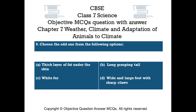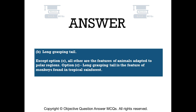Question number 9. Choose the odd one out. Option B — long grasping tail. Option C — white fur. Option D — wide and large feet with sharp claws. The right answer is Option B: long grasping tail. All other options are features of animals adapted to polar regions. Long grasping tail is the feature of monkeys found in tropical rainforests.